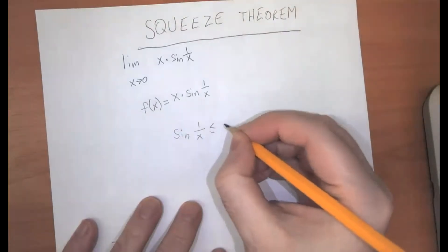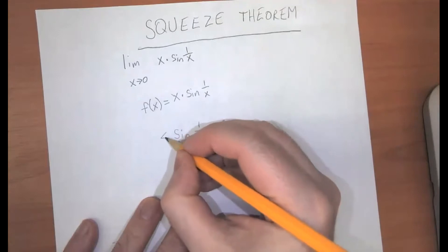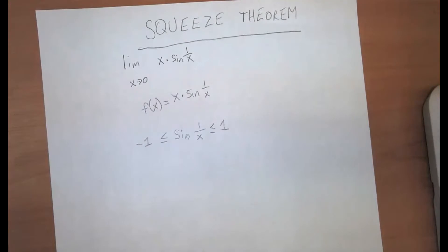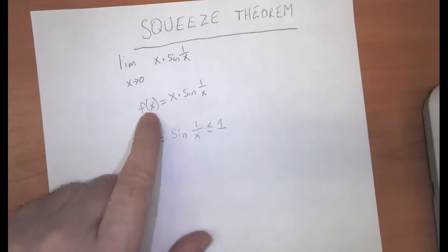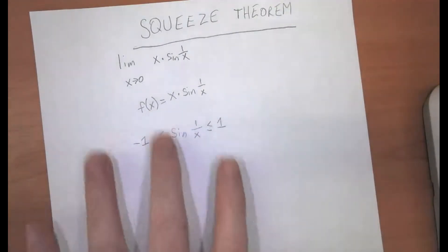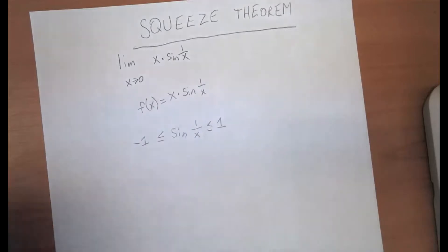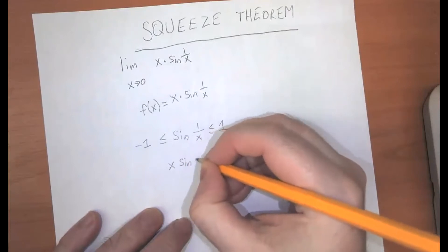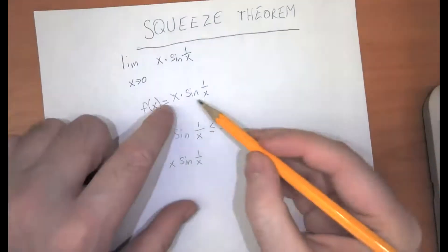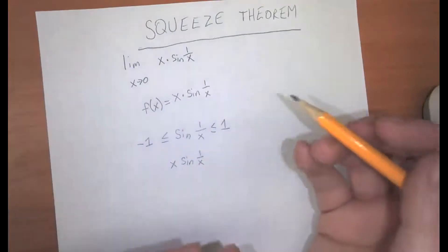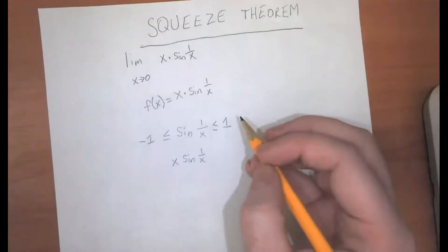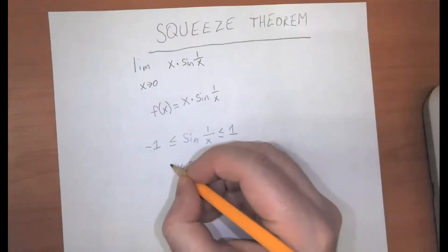What is the maximum possible value and the minimum possible value that this function could have? Well, we know that sine of 1 over x is going to be less than or equal to positive 1, and it's always going to be greater than or equal to negative 1. That's kind of interesting, but that's not exactly our function f. So I want to multiply every side of this inequality by x, so in the middle we're going to have x times sine of 1 over x. Things are getting a little confusing because x could be positive or negative, and that affects the numbers on the other side.